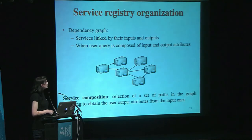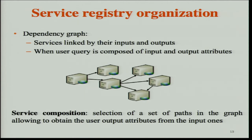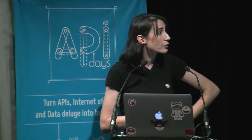If the user asks their query by giving only input and output attributes, we represent the service registry as a graph. All vertices of the graph are services, and you have an edge between service A and service B if the outputs provided by service A are inputs of service B. In this case, a service composition consists of selecting several paths in the graph, from the service whose inputs are the user's inputs to the service producing the user's desired outputs.